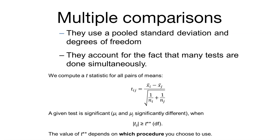For some given test statistic, if you have mu sub i and mu sub j, we compare that to some value t** that depends on your degrees of freedom. What we call t** really depends on which procedure you choose — that is, which multiple comparison procedure from the literally hundreds available in the statistical literature.